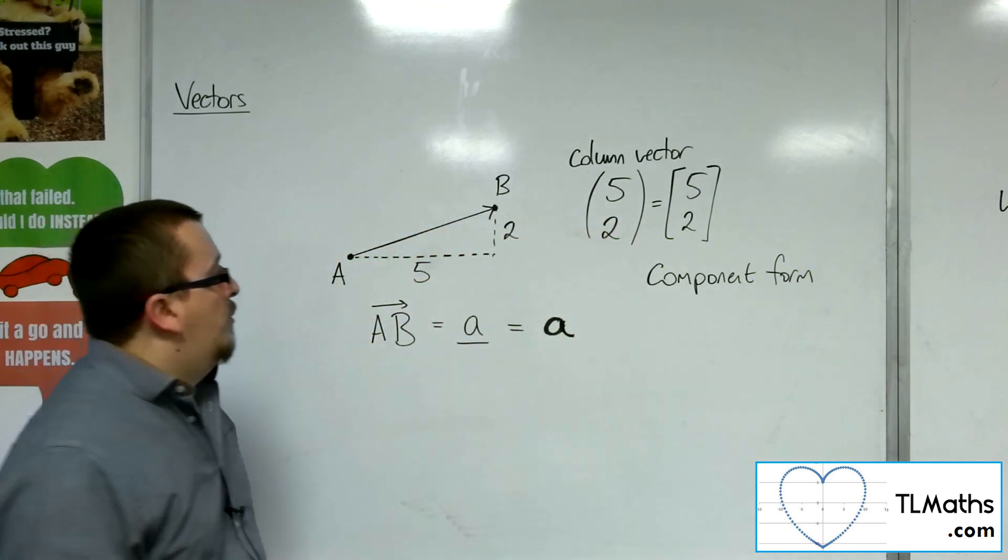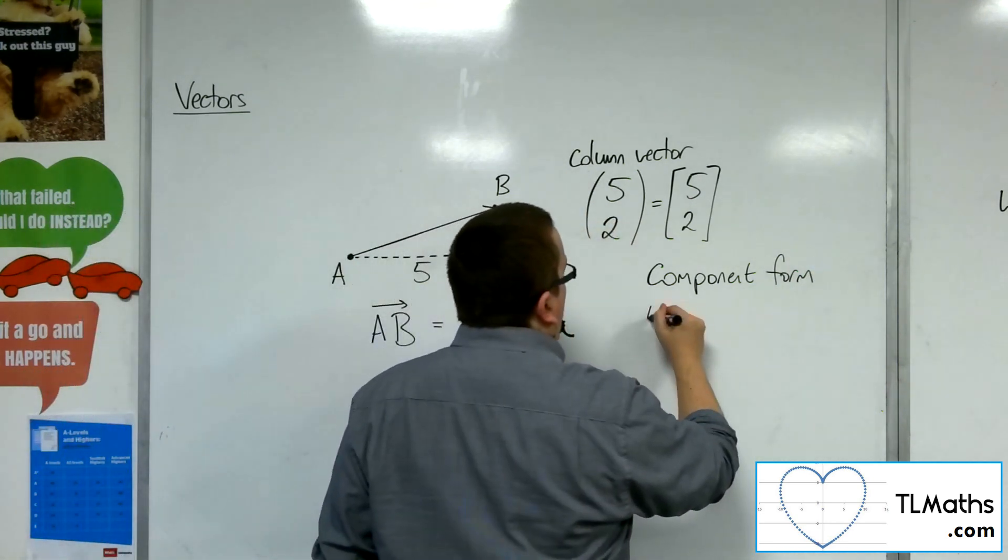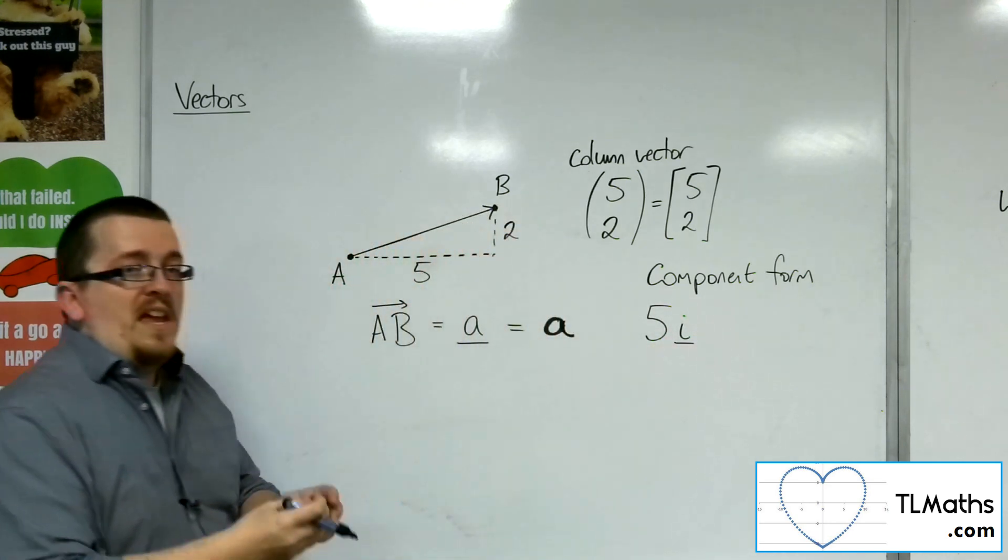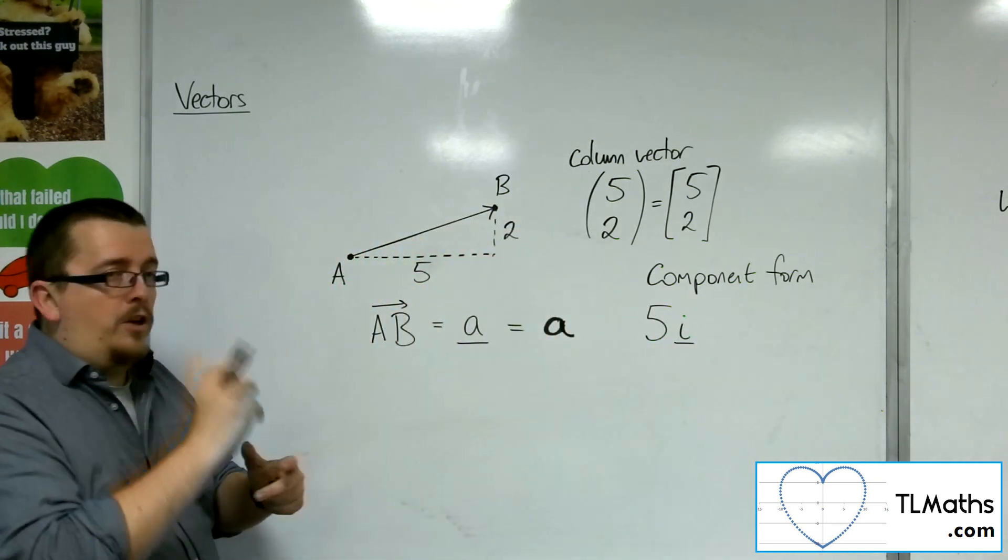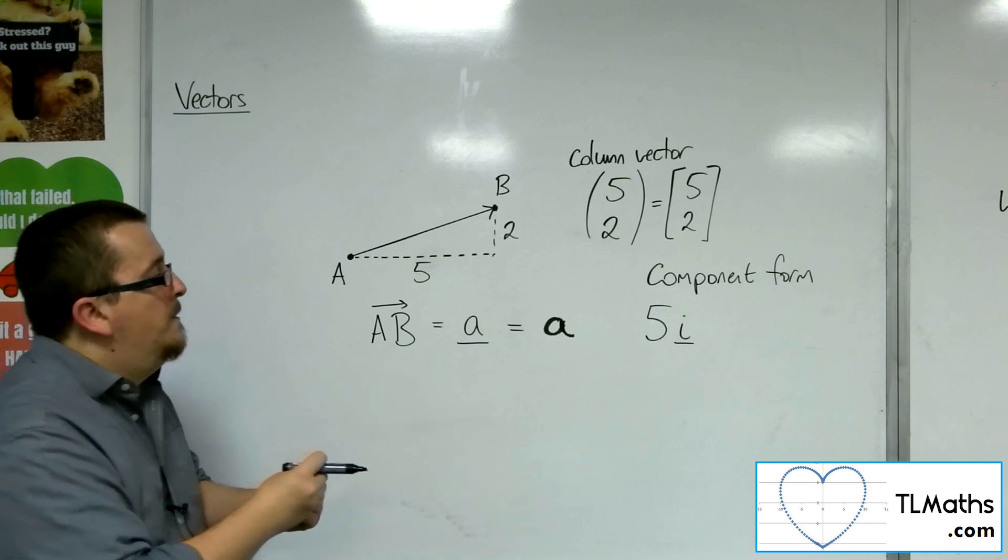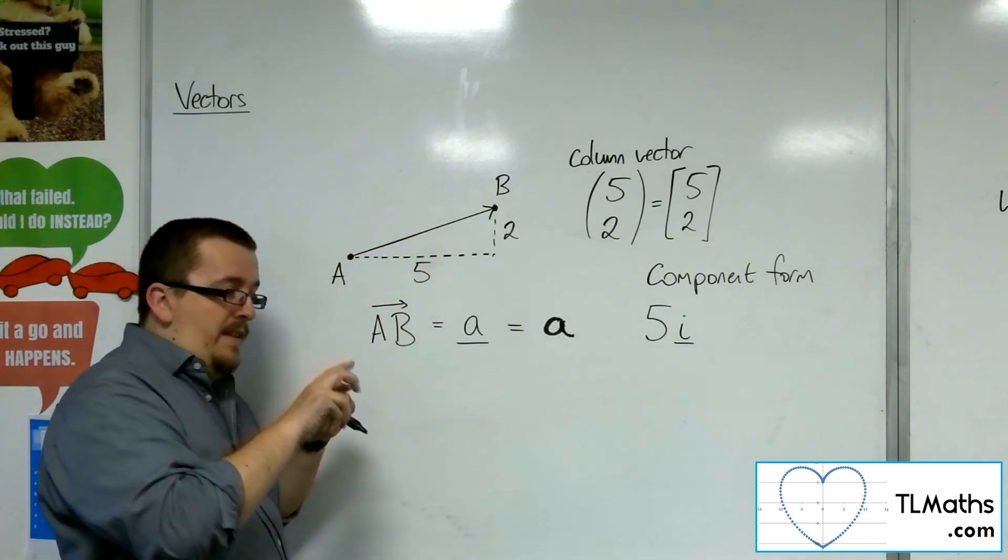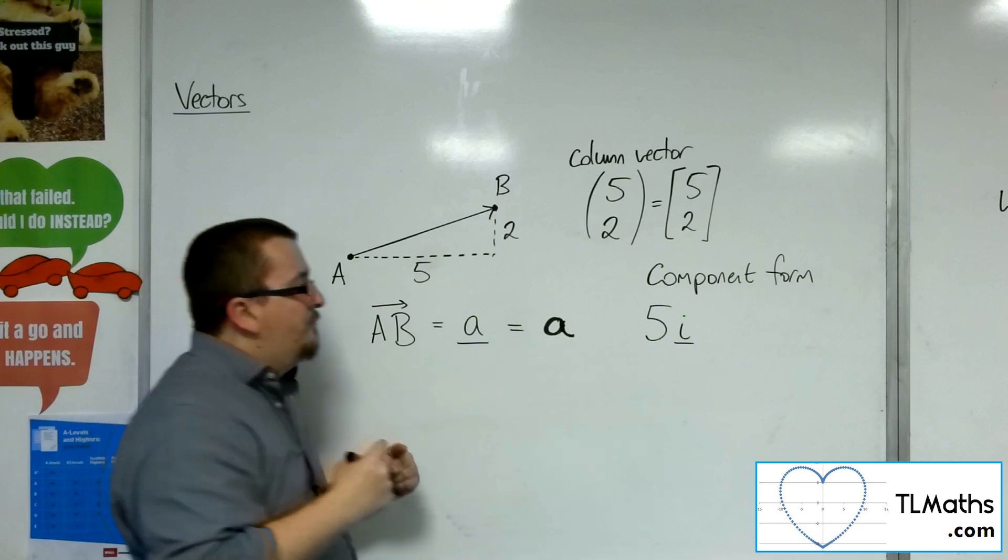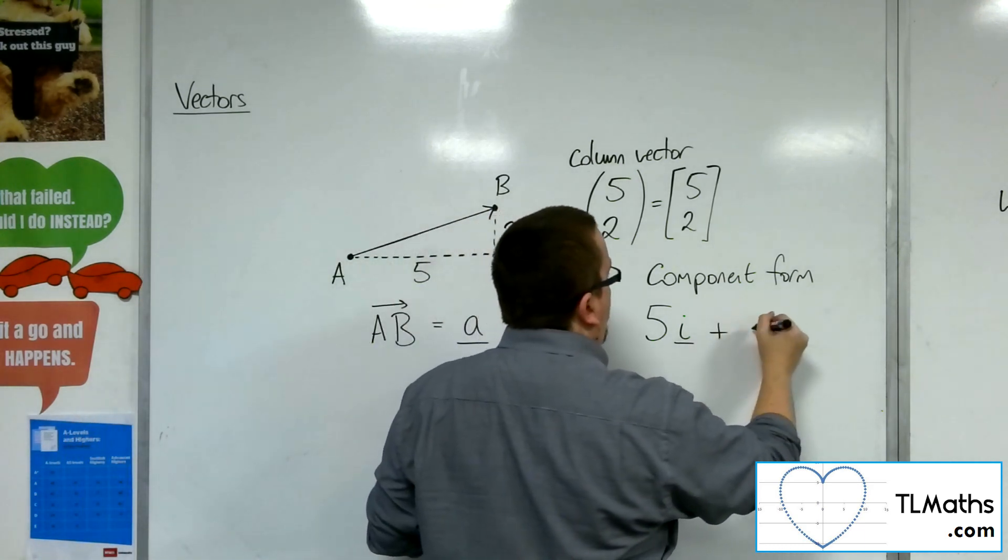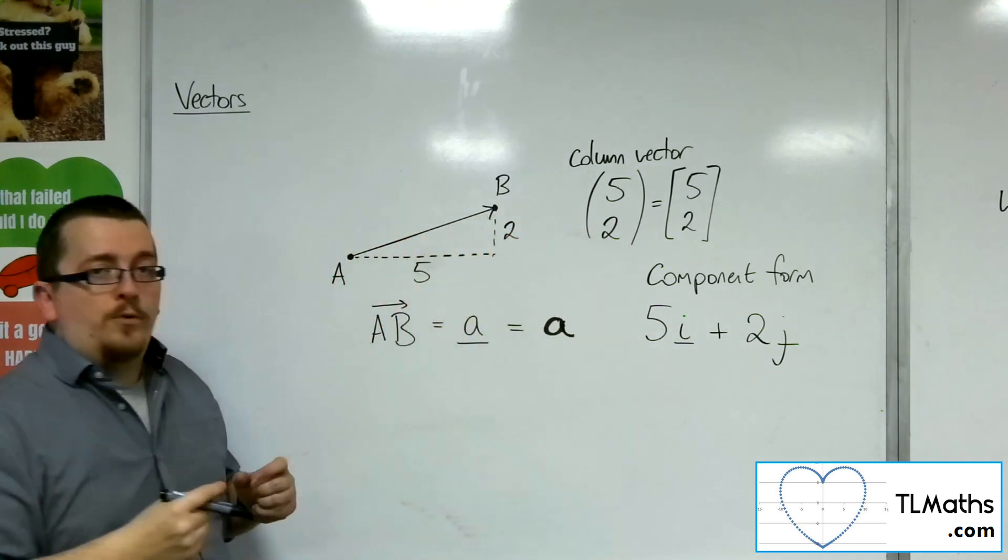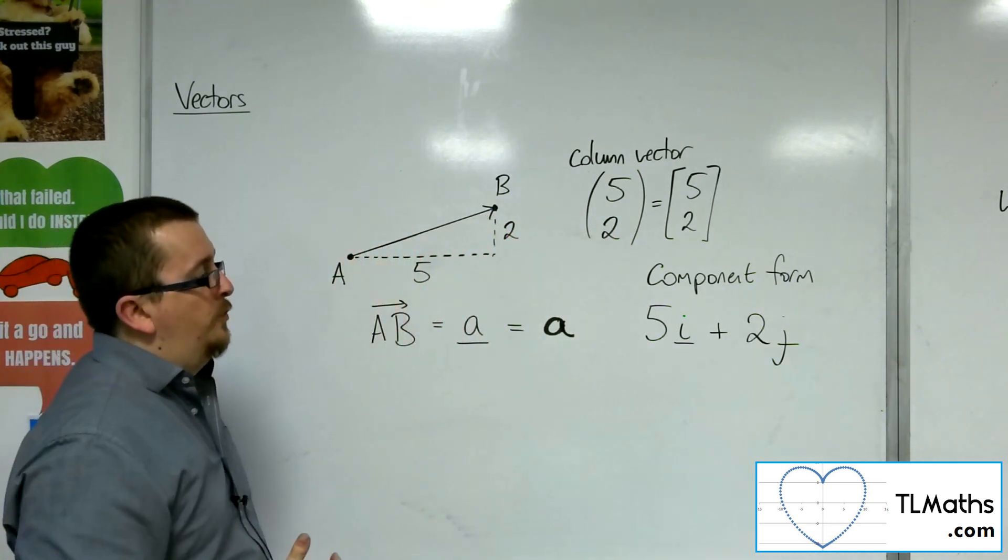And component form, it would write like this. So 5 along, and we say we use the i vector, and I'll show you what i represents in a moment, to represent moving along in the x direction. Plus, 2 up, and we use j to represent moving in the vertical direction.